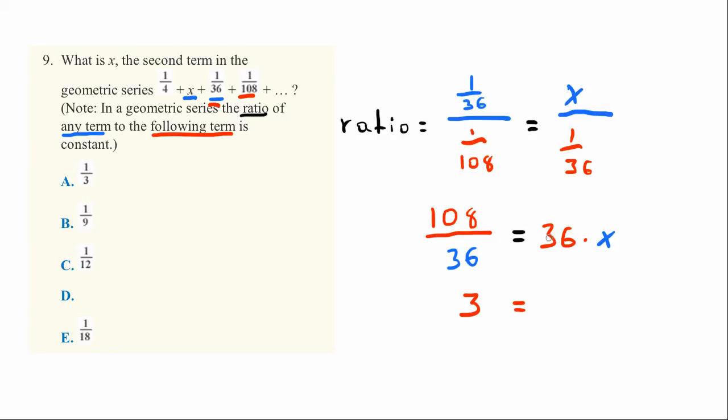And then that means that 36 times x is equal to 3. So 36 times x is exactly equal to this. And if we divide both sides by 36, we get finally 3/36 is equal to x.